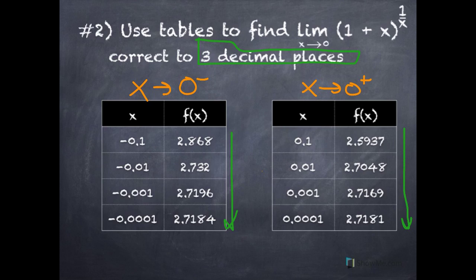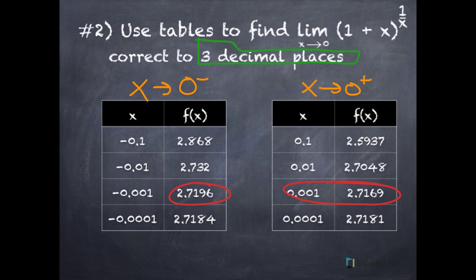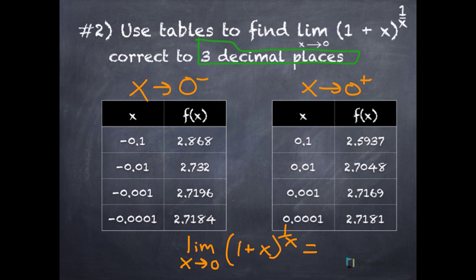Comparing values from each table — the second y values both have 2.7 in common, the third ones both have 2.71 in common, and the last ones, to three decimal places, both give 2.718. The fourth decimal places are 4 and 1, but if rounded they both round to 2.718. So the limit as x approaches 0 of (1 + x)^(1/x) is approximately 2.718.